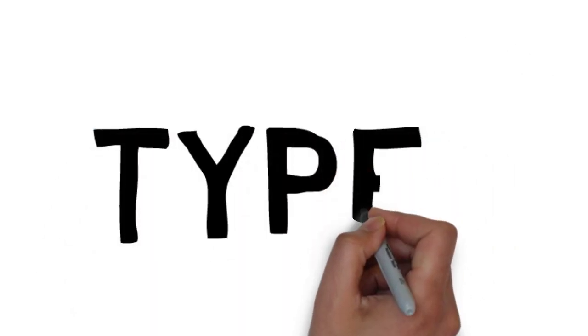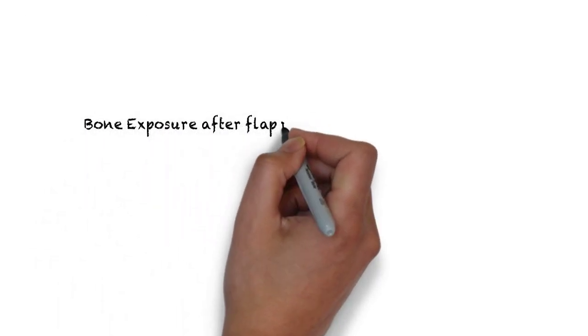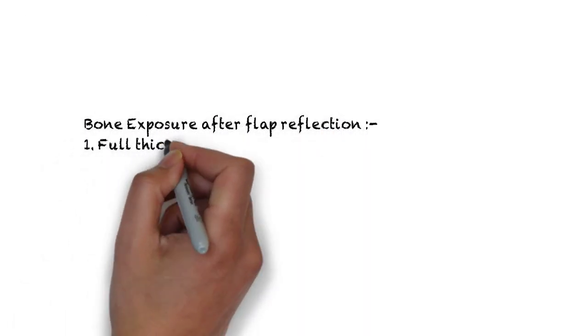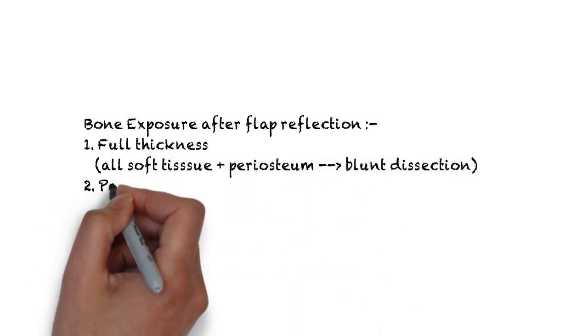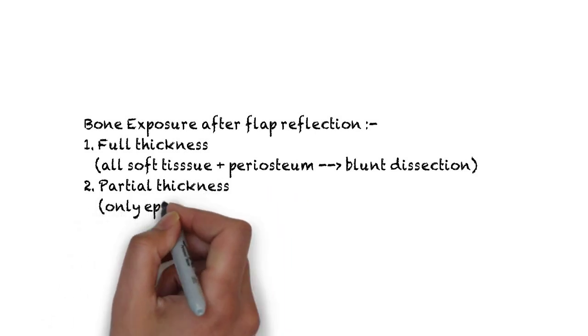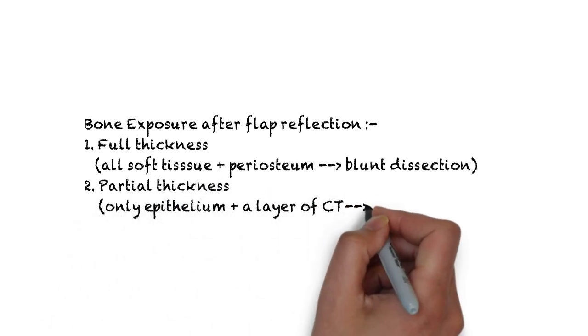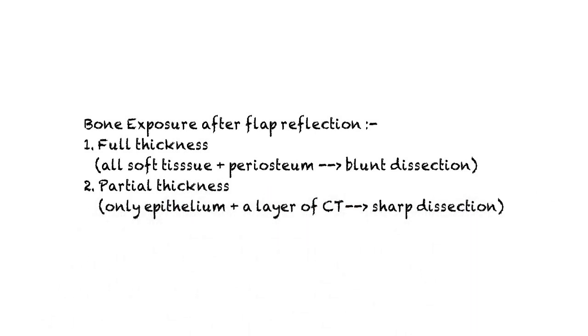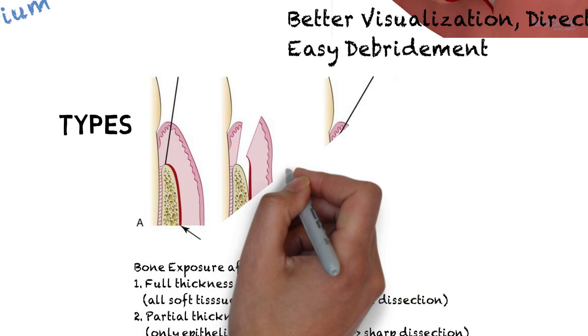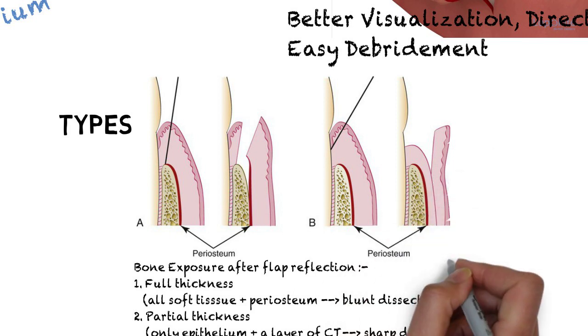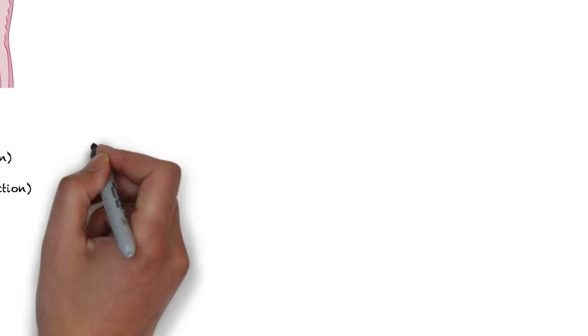Next is the types of periodontal flaps. They can be classified based on three categories. Firstly, based on bone exposure after flap reflection, it is of two types: full thickness, wherein all of the soft tissue along with the periosteum is reflected, usually done by blunt dissection; second is the partial thickness flap, wherein only the epithelium and a layer of connective tissue is reflected, done using sharp dissection.